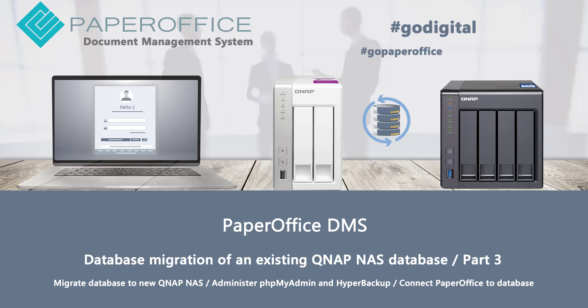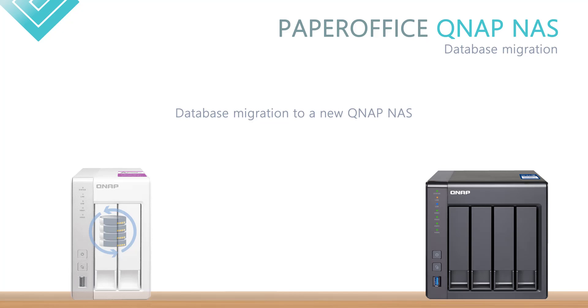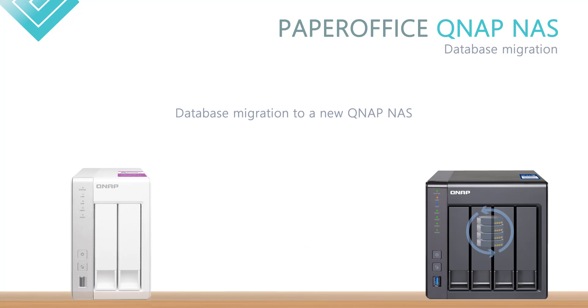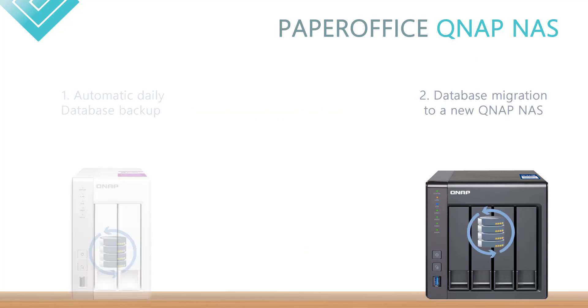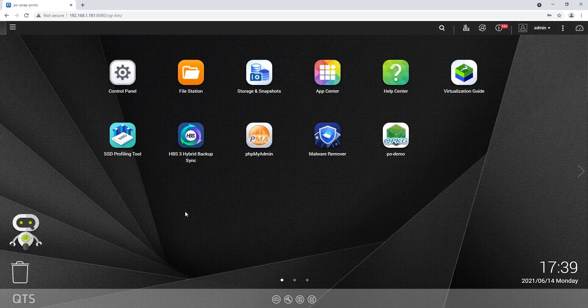Hello and welcome to our new workshop. This workshop comprises the third part of the multi-part workshop series on the subject of QNAP NAS data backup and describes the migration of an existing database to a new QNAP NAS device. All the settings for this type of data backup have already been made in the first part of the workshop series under the second method. I add the direct link to the video in the description field. To import the data backup, I log into the QNAP interface as the first step.